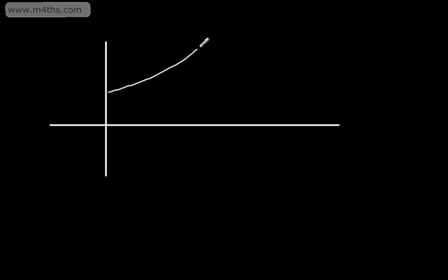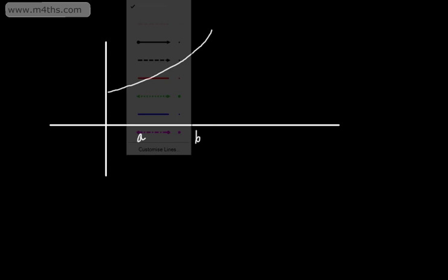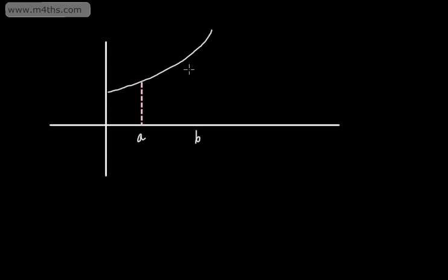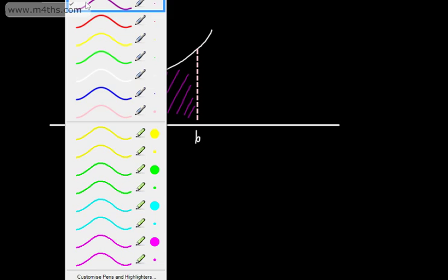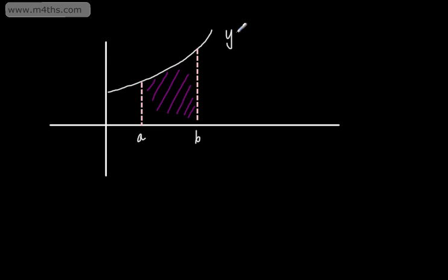So let's go ahead and draw a sketch. Our curve could look something like so. I'm going to have an x-coordinate of a and an x-coordinate of b. If we have a continuous function in the interval from a to b, we can find the area trapped under the curve using a definite integral. If this curve is y equals f of x, the area trapped under the curve can be given as the integral from a to b of f of x dx.